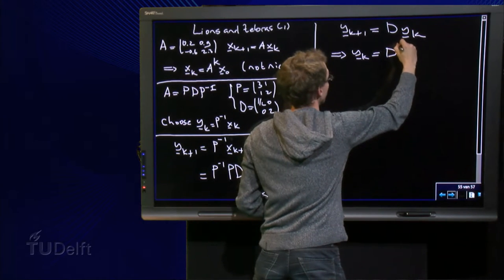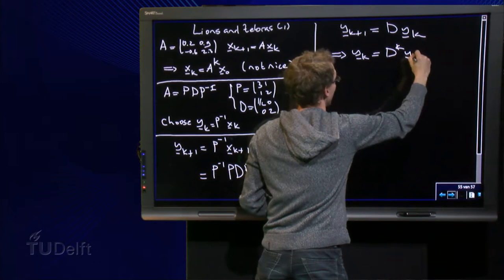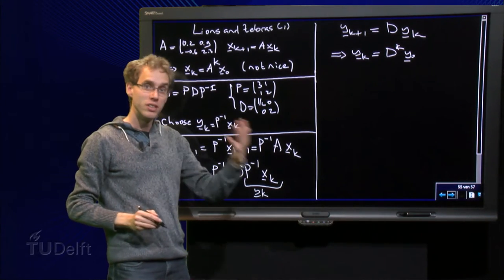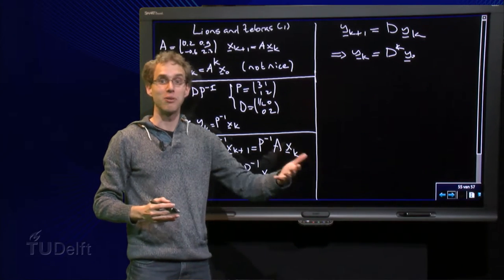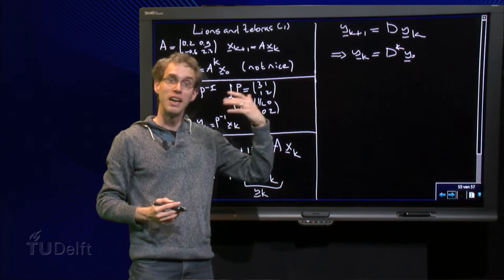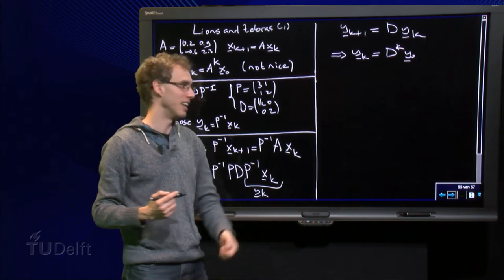Y_k = D^k y_0. So we know what y_k is, but we want to know x_k of course, because x_k contains the information about the lions and the zebras. So what happens to x_k now?